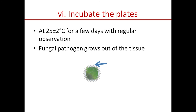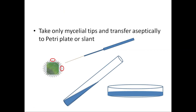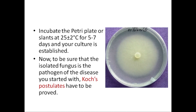Incubate the plates at 25°C ± 2°C for a few days with regular observation. The fungal pathogen grows out of the tissue; you will find fungal mycelia radiating from the leaf tissue, as shown by the arrow marks — the growth may radiate from one side or in all directions. Then take only the mycelial tips and transfer them aseptically to a Petri dish or slant with the help of an inoculation needle. Incubate the Petri plate or slant at 25°C ± 2°C for five to seven days and your culture is now established.